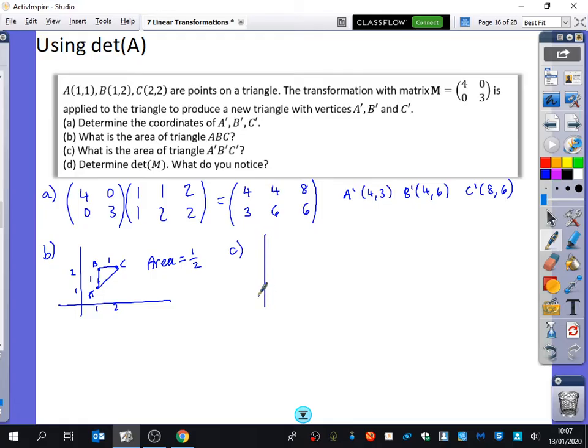And then for C, I'll do a sketch just because it might help us see what's going on here. We've got that it's 4, 3. We've got 4, 6, and we've got 8, 6. I haven't done it particularly well to scale there. But hopefully we can see it has stretched more in the X direction than it has in the Y direction. So the area, this gap is 3, and this gap is 4. So the area is 6. So we can see the area has gone up by 12. And it's asked us to find out the determinant of M. So the determinant of the matrix, which is 4, 0, 0, 3, is 12. Because you do the 4 times 3 minus the 0 times 0.